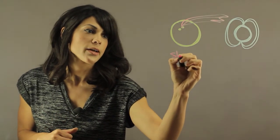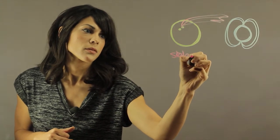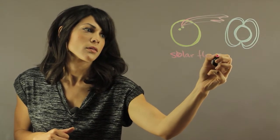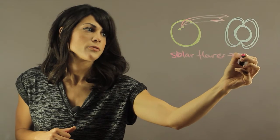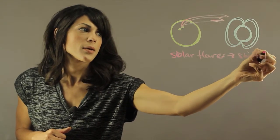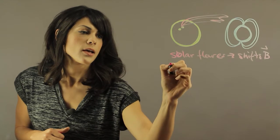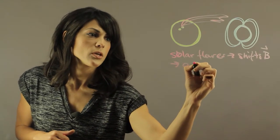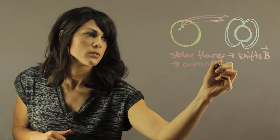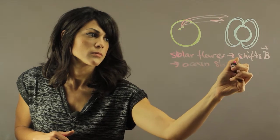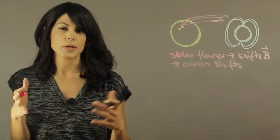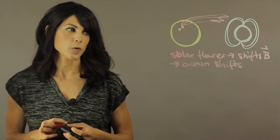So solar flares shift the magnetic field and this causes the ocean to shift. This also creates all this jet stream currents to move and so forth.